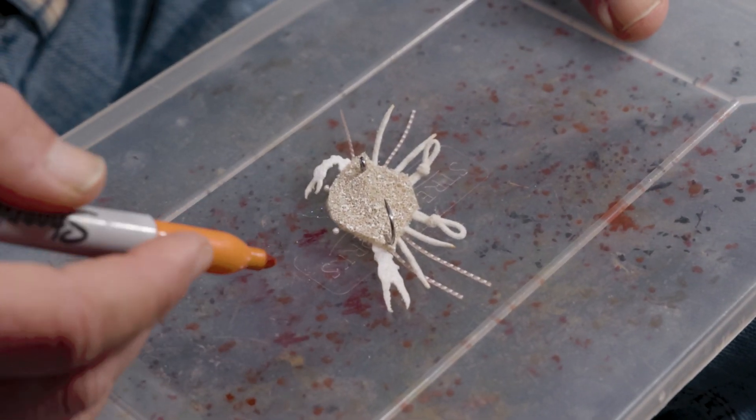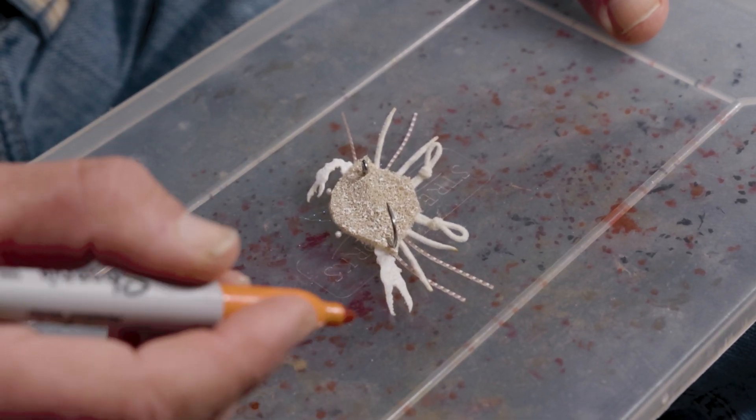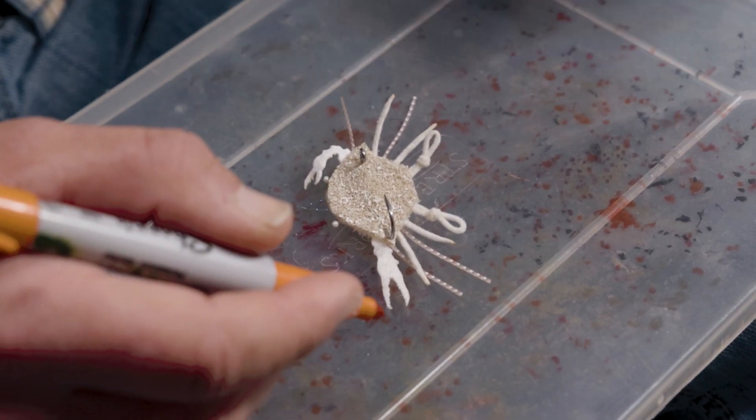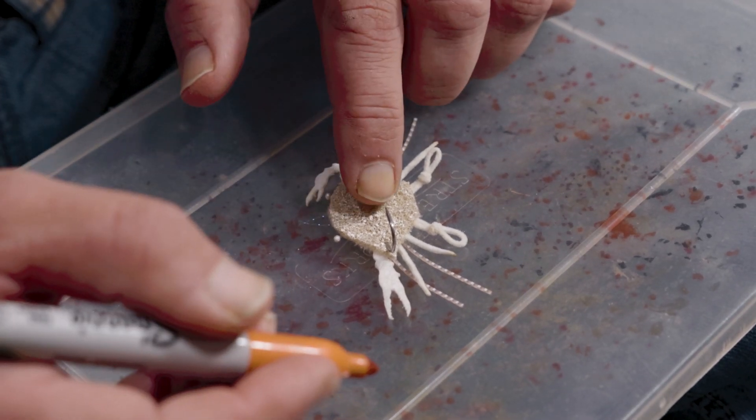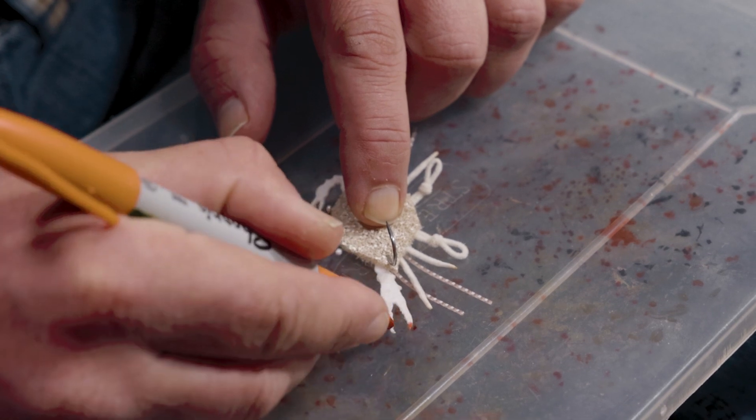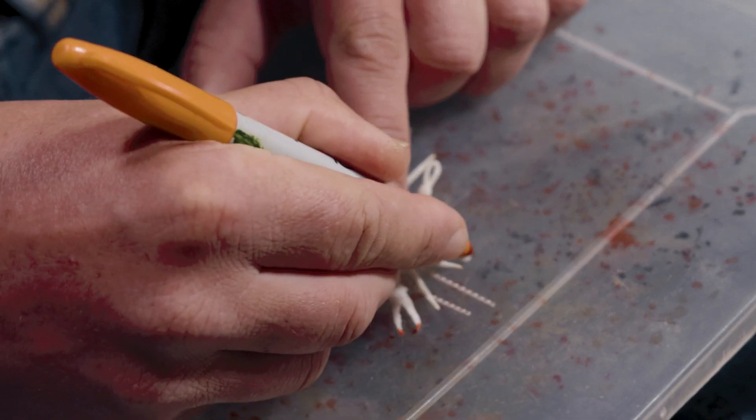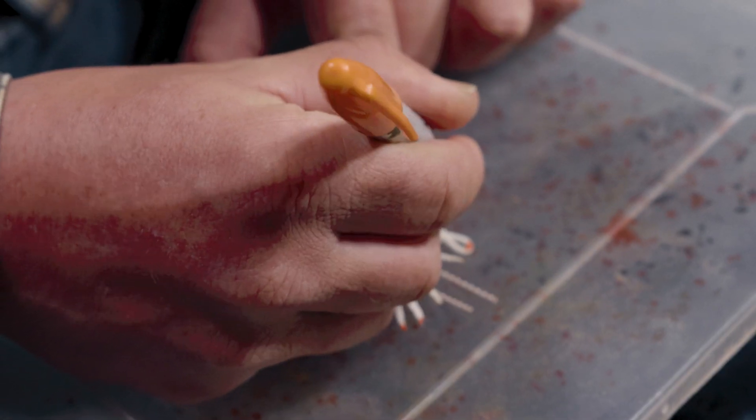All right, so we've let this crab dry for a little bit to stiffen it up. Now we're going to give it the final step, just a paint job with some permanent markers. Usually start out with the lighter colors first, so in this case kind of a bright orange on the tips of the claws and the very back of little paddle legs.